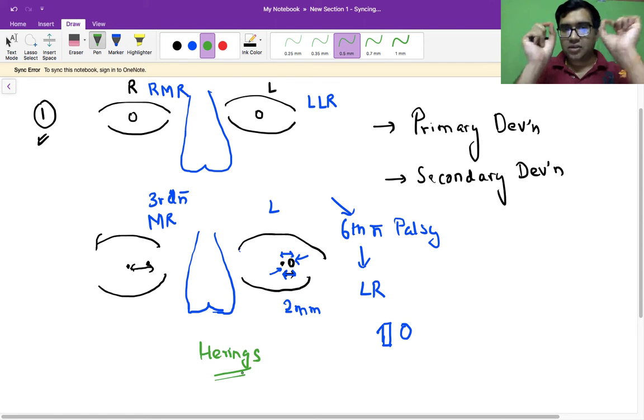equal innervation. So whenever we have one movement it cannot be isolated. So according to Hering's law of equal innervation, our medial rectus which is a yoke muscle of our lateral rectus, it would also contract. So the medial rectus would contract and because our third nerve is normal, let's say it contracts and the new position of pupil is 4 millimeter from its original position. So let's say it is O and this is O'.